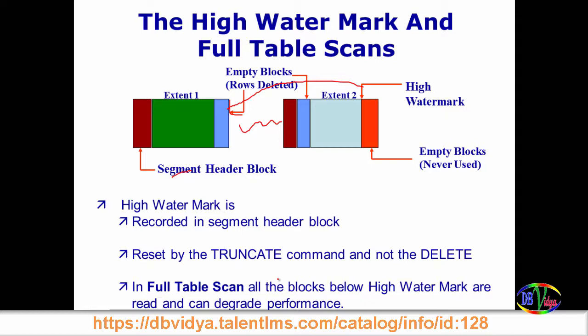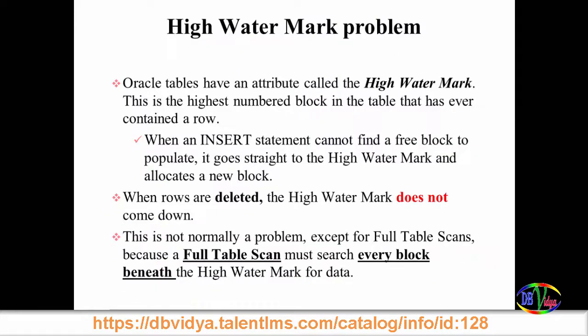In a full table scan, all blocks below the high watermark are read, and this can degrade performance. Even though there are only a thousand records, the scan still reads up to the high watermark, touching even empty data blocks. Oracle tables have an attribute called high watermark, and whenever rows are deleted, if you suspect this is the problem, there are some methods to handle it.